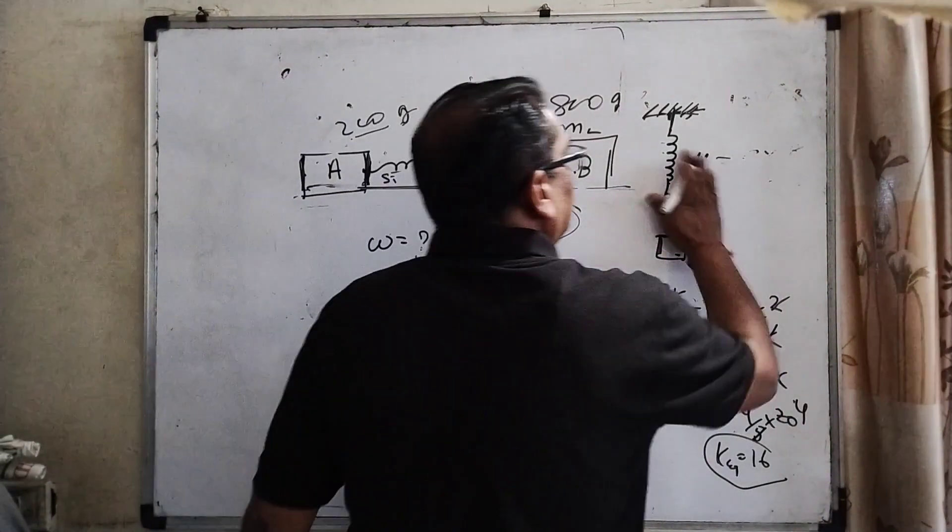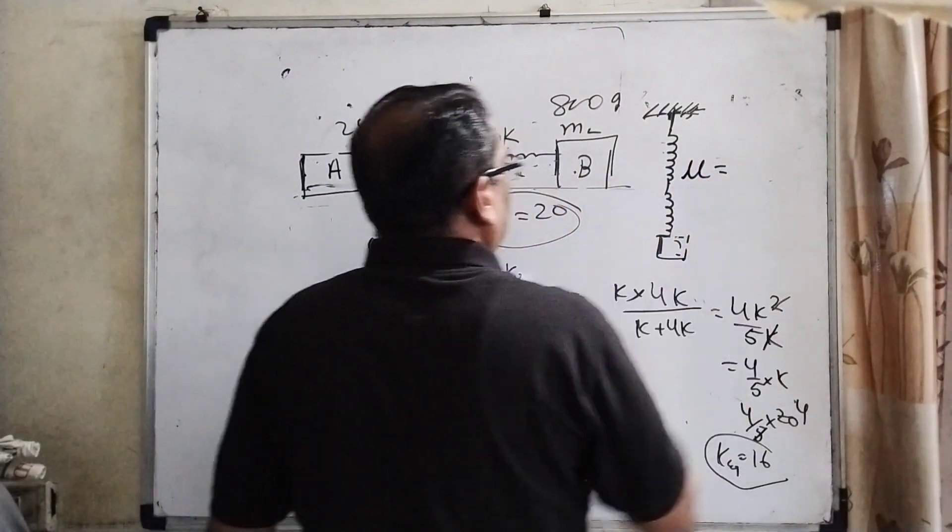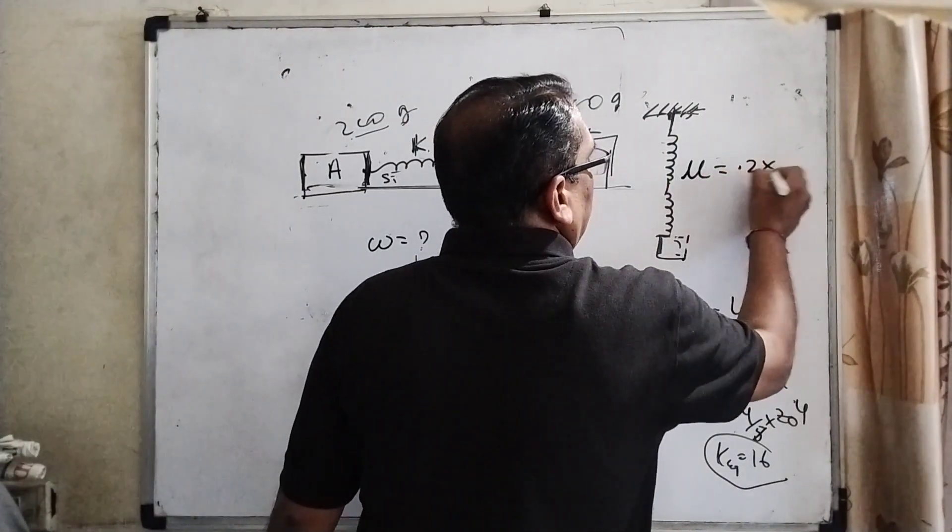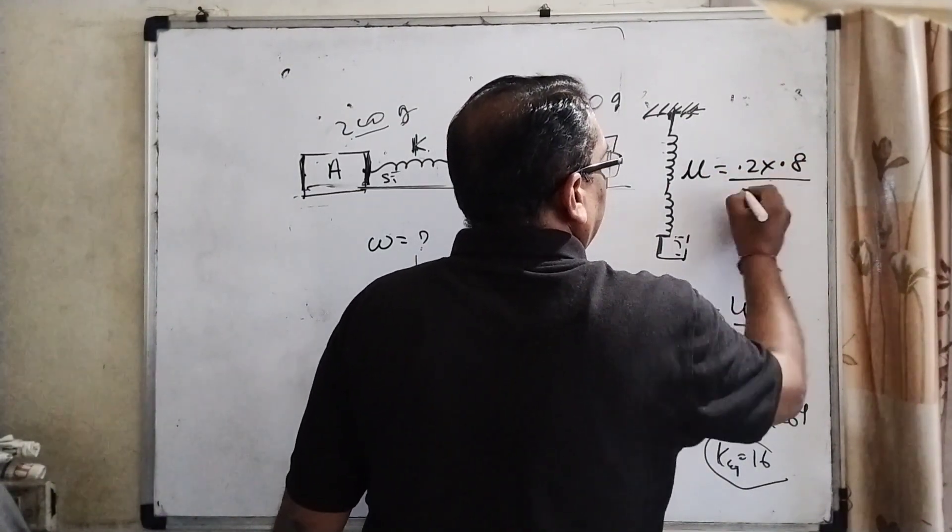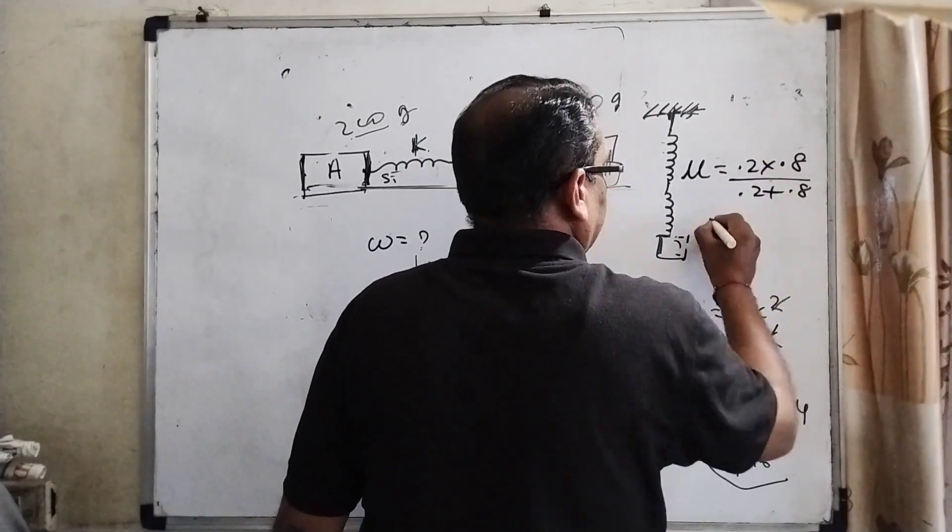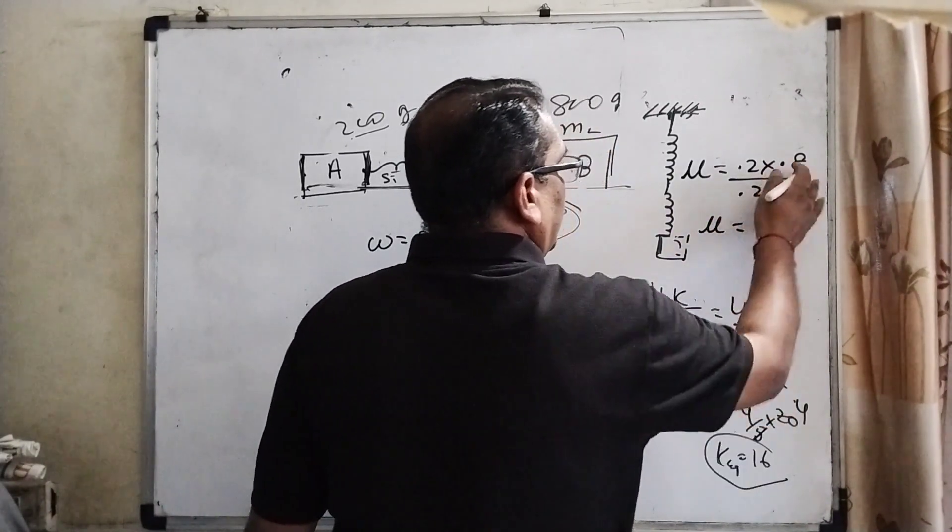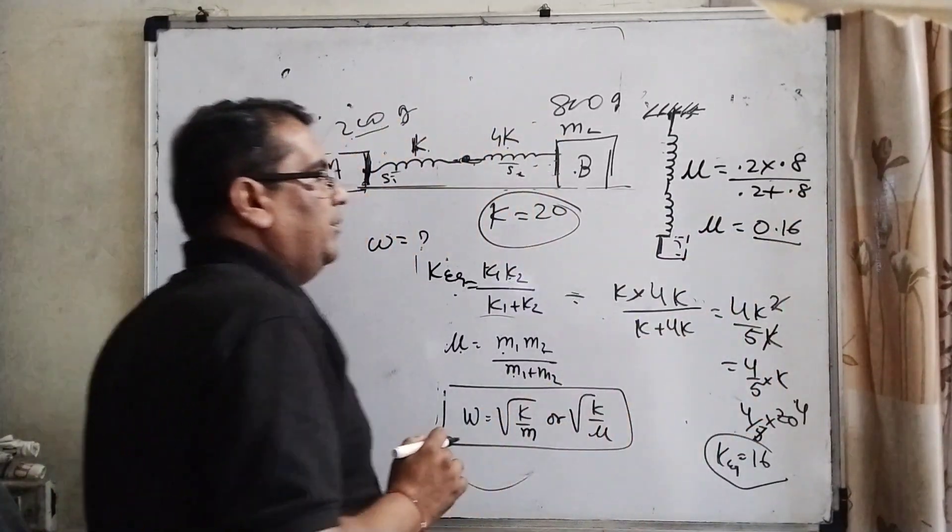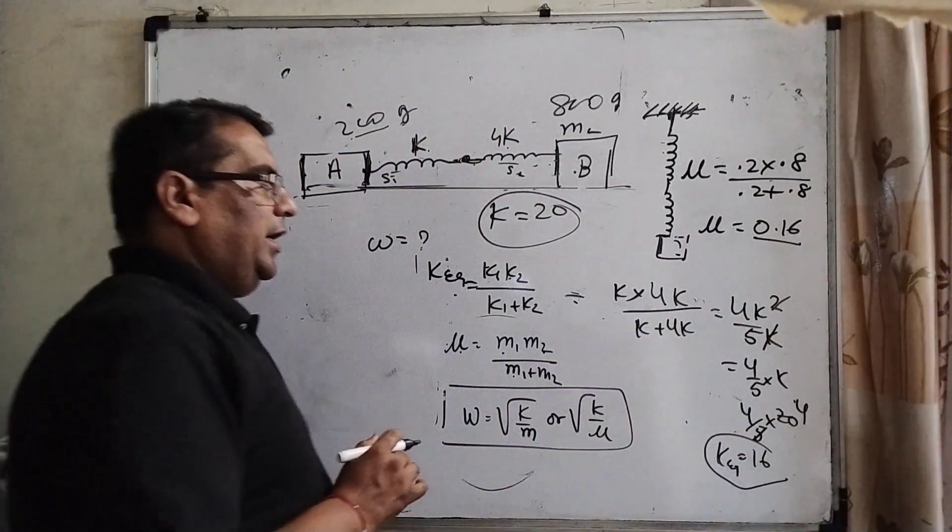Now we have to find mu. Mu means reduced mass is 0.2 times 0.8 upon 0.2 plus 0.8. Then mu equals 0.16 upon 1.0, which means mu equals 0.16.